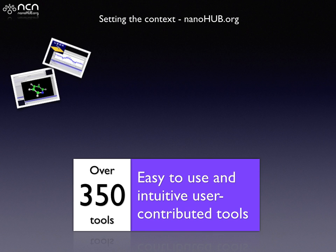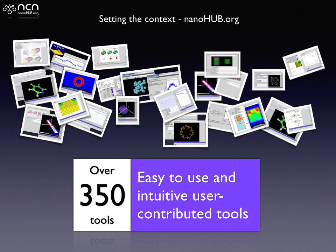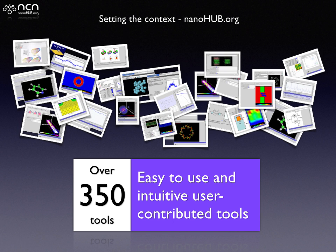So what do these users do? We have a large number of content objects on Nanohub. In this particular case we have over 350 different tools. The important thing to point out about our tools is that they are very easy to use and very intuitive. Users contribute these tools — they come directly from research and find their way into the classroom and into projects. The requirement in your project around ease of use comes from the fact that our users have come to expect our tools to be very easy and intuitive.